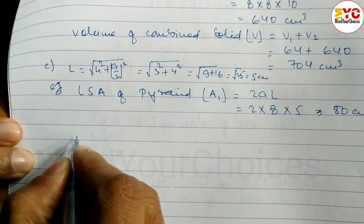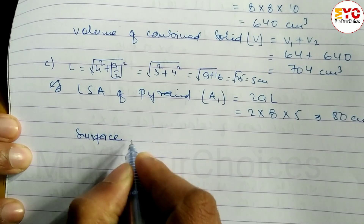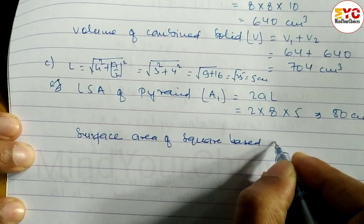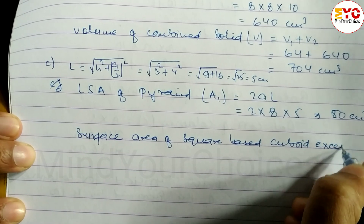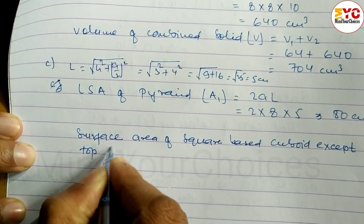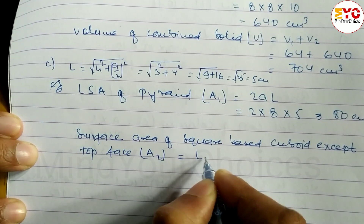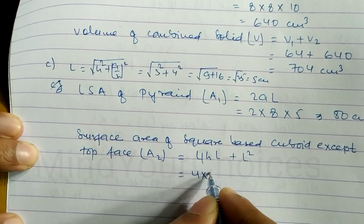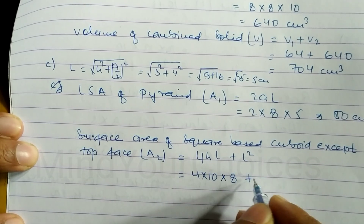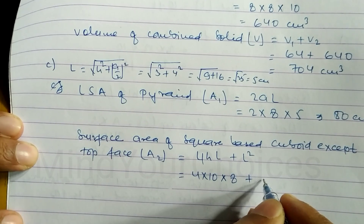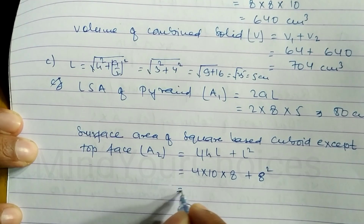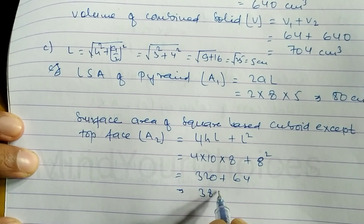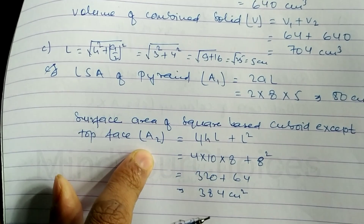Surface area of the square-based cuboid except the top face, denoted A2, formula: 4hL + L² = 4 × 10 × 8 + 8² = 320 + 64 = 384 cm².